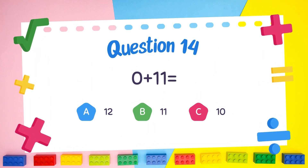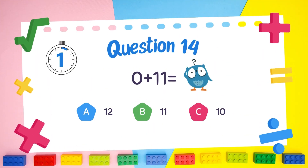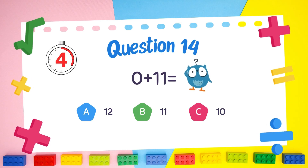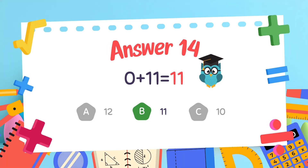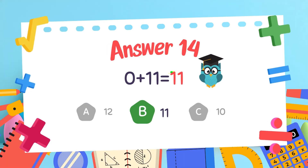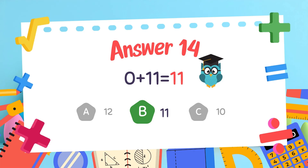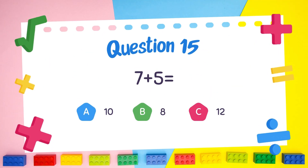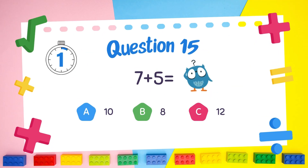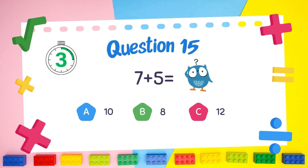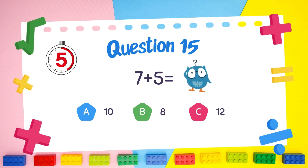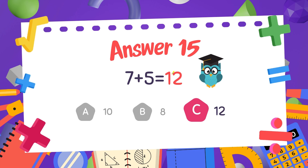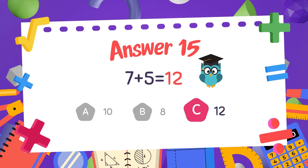What is 0 plus 11? The answer is 11. What is 7 plus 5? The answer is 11.